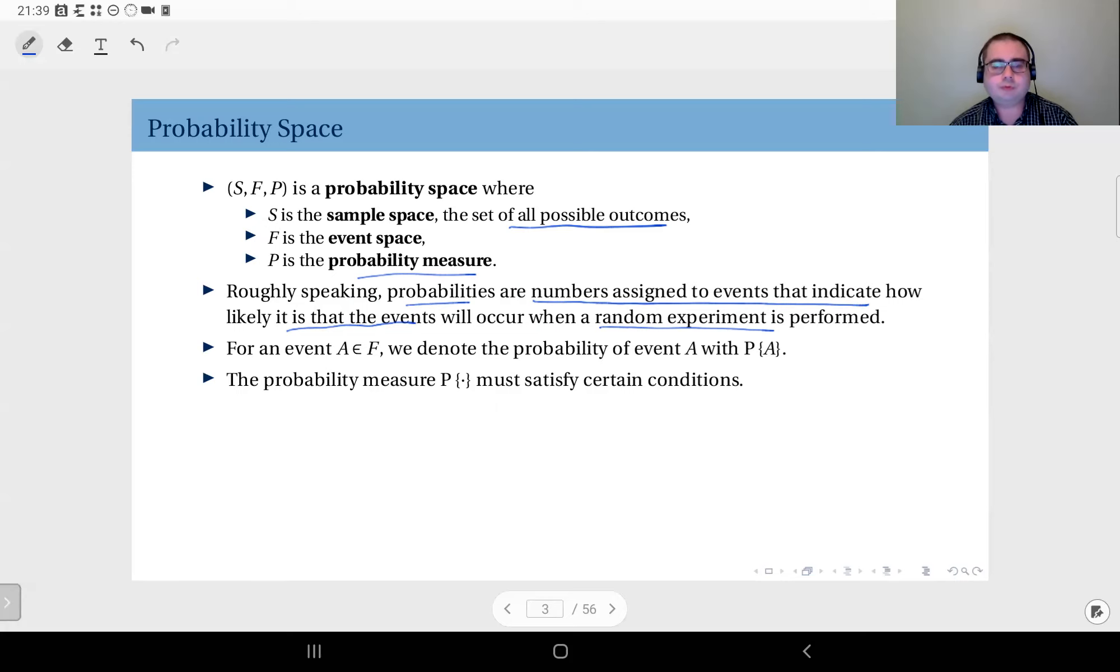We have to be careful to satisfy certain specific rules. For an event A, which is an element of the event space, the probability of event A is denoted with this notation. In some other resources you might come across other notations—you could see curly braces, or sometimes you can see PR like this, or a bold face P, etc. This is the notation we use, and as I said, the probability measure must satisfy certain conditions.